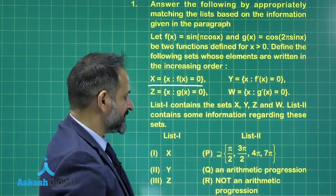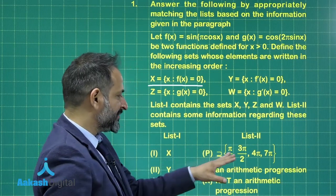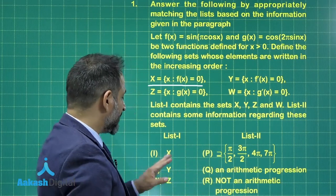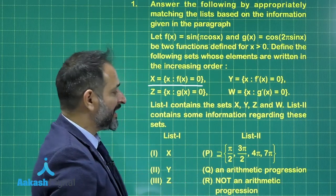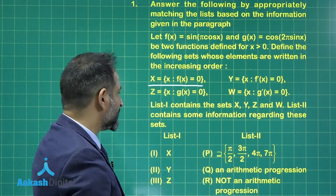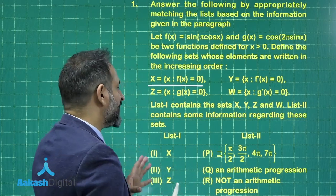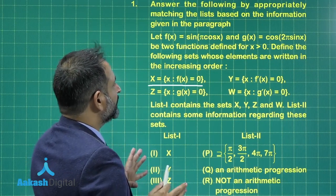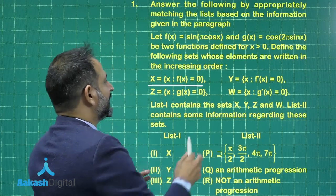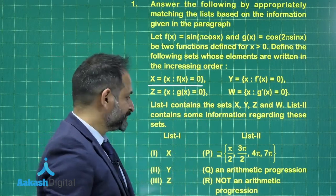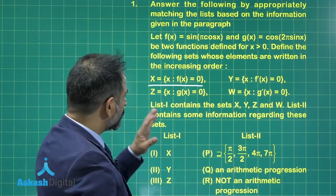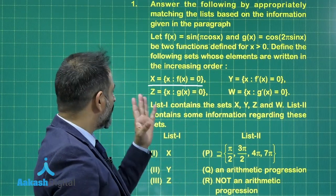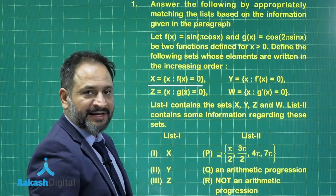Option P is a set containing 4 elements. Option Q states that the elements of X are in arithmetic progression, and all the information is written in increasing order. We have to check first for X, then move to Y, Z, and W.